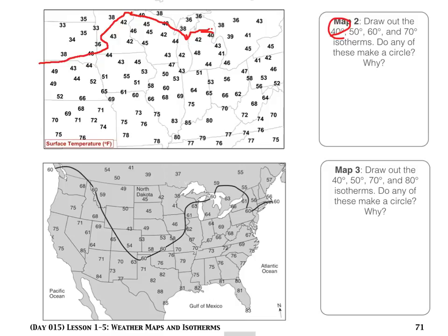The other half is drawn similarly but going in the other direction. Between 39 and 43, 39 and 41, 39 and 46, 39 and 45 there's a 40; then 39 and 41 again, 36 and 41, and 36 and 43. Now we've drawn our line from one end of the map to the other.